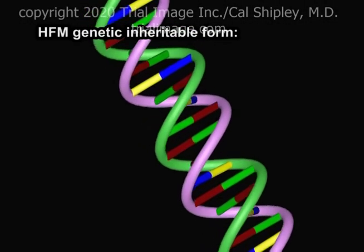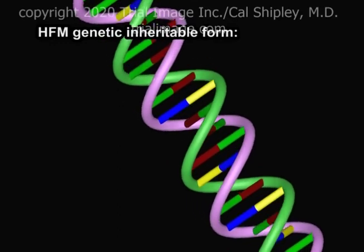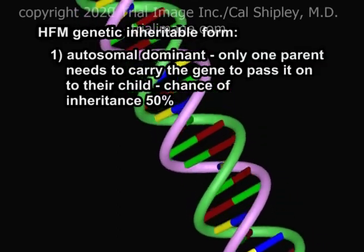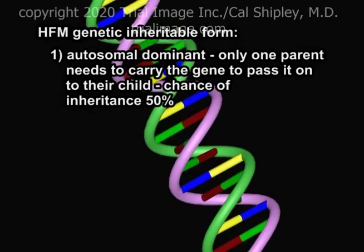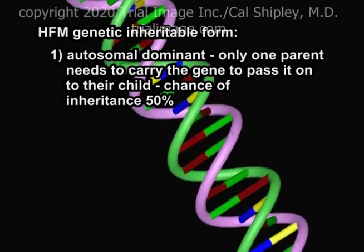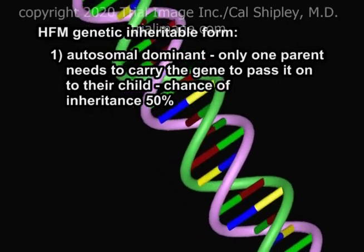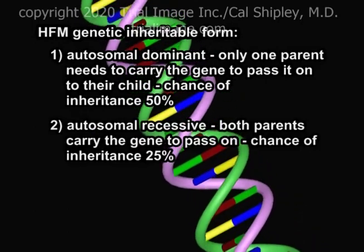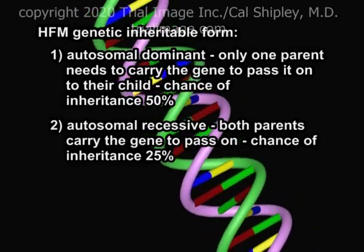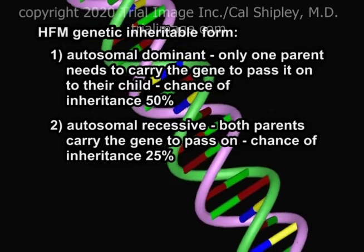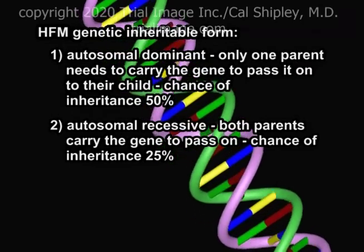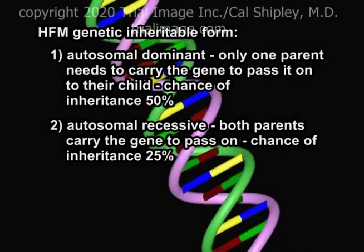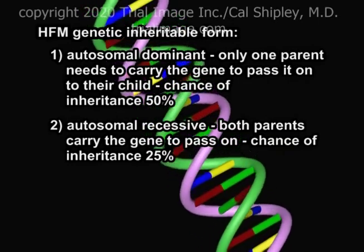The genetically inheritable form of HFM occurs in an autosomal dominant variety, in which only one parent needs to carry the gene in order to pass it on to their child — the chance of inheritance with this form is 50%. There is also an autosomal recessive variety in which both parents must carry the gene in order to pass it on to a child, with a chance of inheritance of 25%.